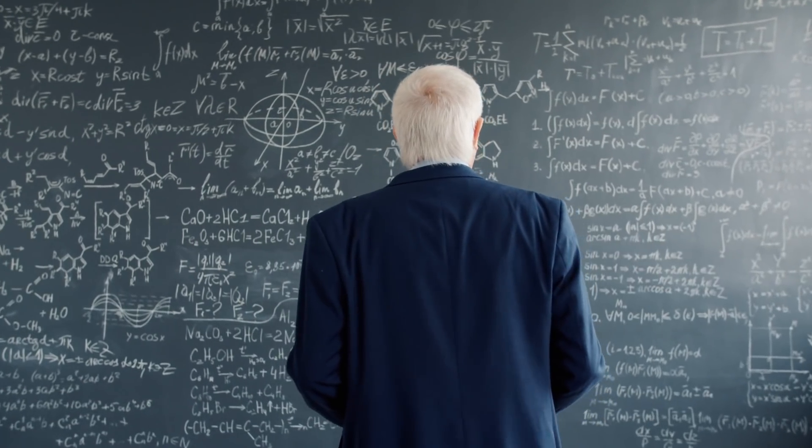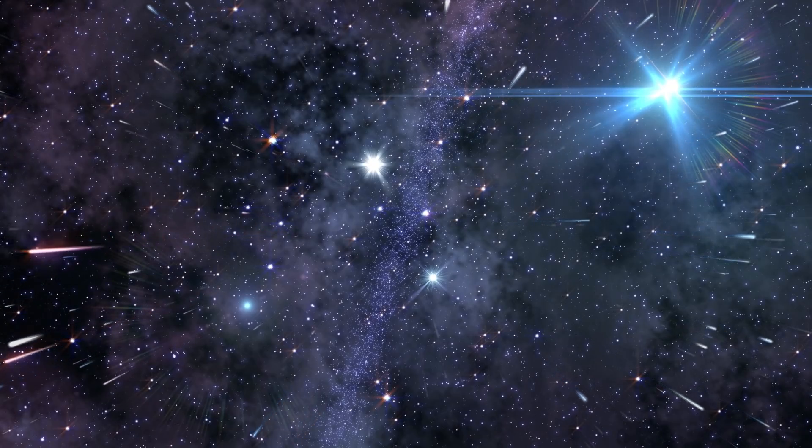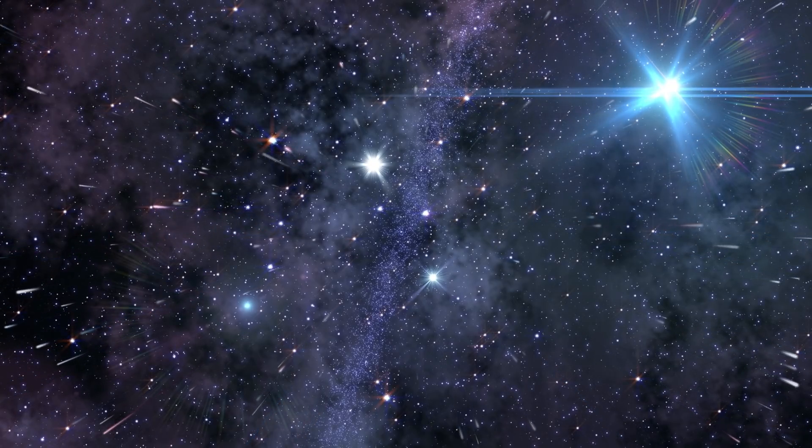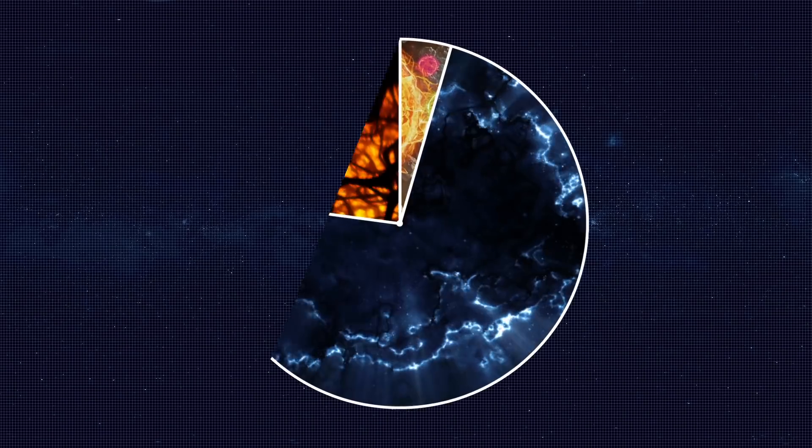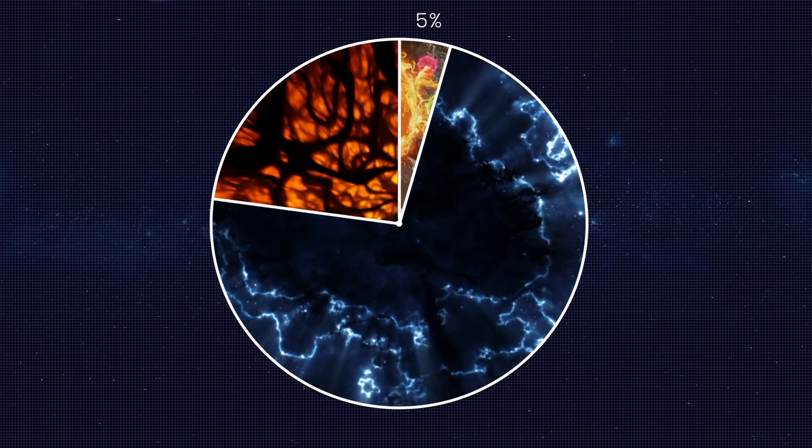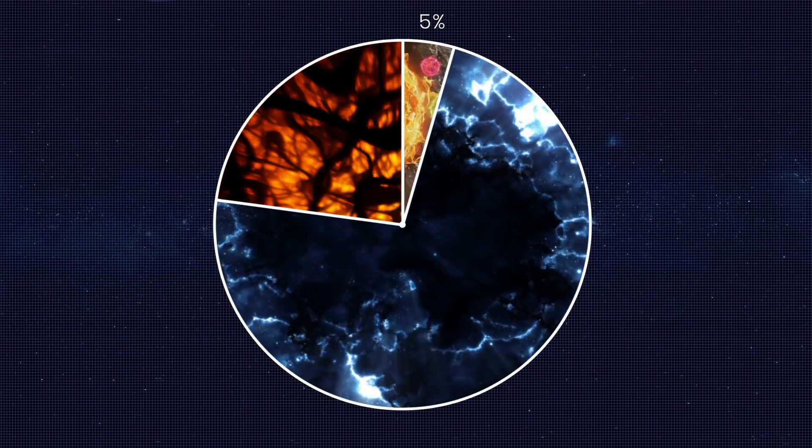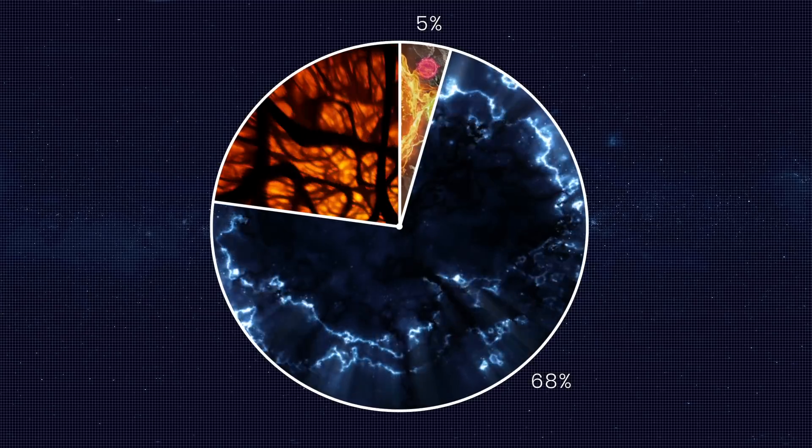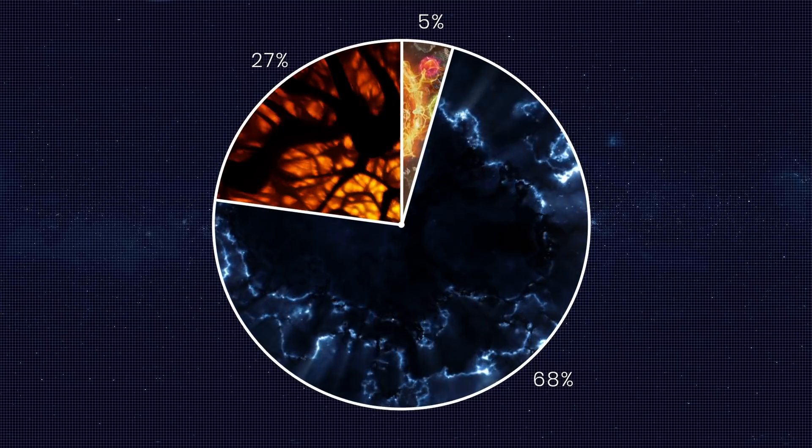If physicists had a most wanted list, dark matter would be at the very top. This is because dark matter is a theoretical invisible material that should be everywhere throughout the cosmos. In fact, just 5% of the cosmos is normal matter, 68% is dark energy, and the remaining 27% is thought to be dark matter.